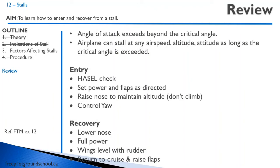Let's review. A stall occurs when the angle of attack exceeds the critical angle. An airplane can stall at any airspeed, altitude, or attitude as long as the critical angle is exceeded. On entry to a stall, do a HASEL check, set the power and flaps as directed, raise the nose to maintain altitude — don't climb unless it's a full power stall — and control yaw with the rudder only, not the ailerons. To recover, lower the nose to a gentle nose-down attitude, apply full power, keep the wings level with the rudder, raise the flaps as appropriate, and return to cruise. That concludes this lesson on stalls. Our next lesson is going to be spins. Thanks for joining me — we'll see you in the next lesson.